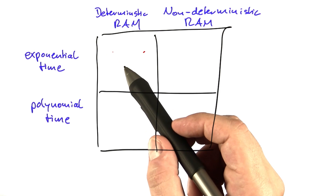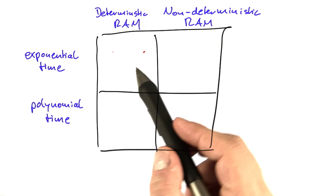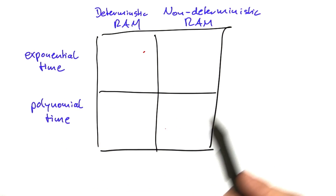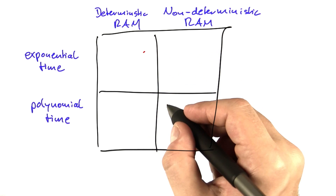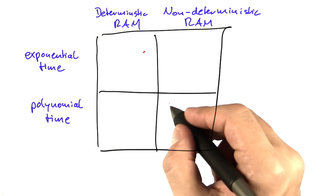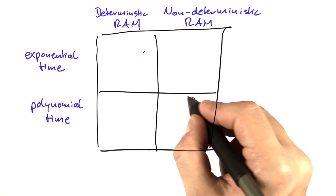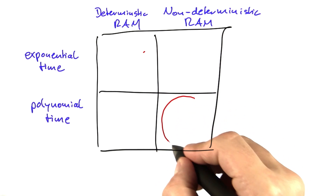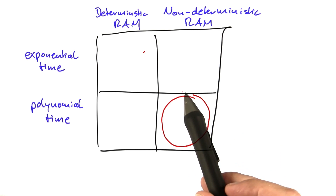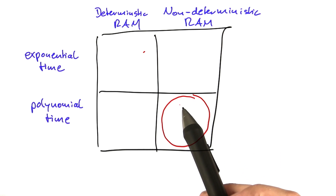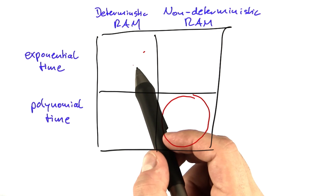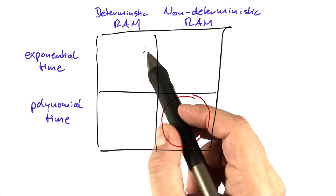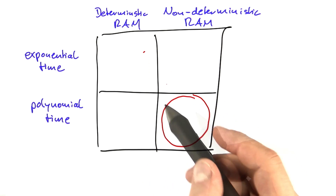Remember the 2x2 matrix that we drew a while ago — we'll now have a closer look at it as promised. What we just found out is that this part here: anything you can do on a non-deterministic RAM in polynomial time can also be done on a deterministic RAM in exponential time.